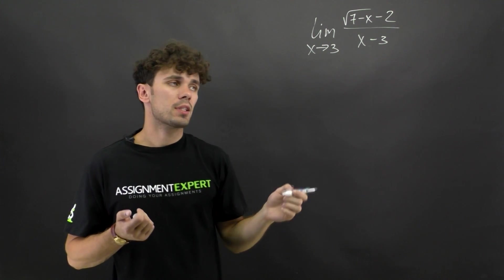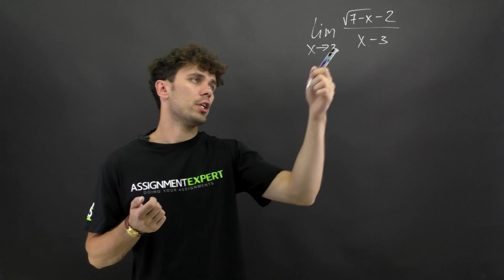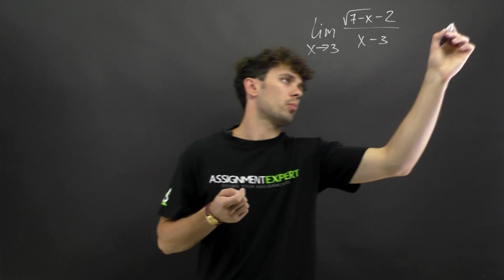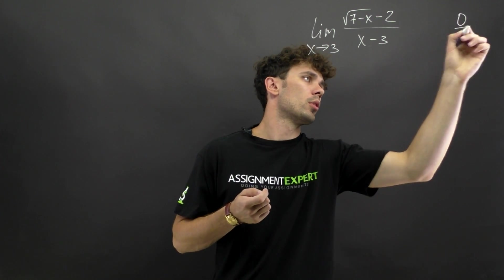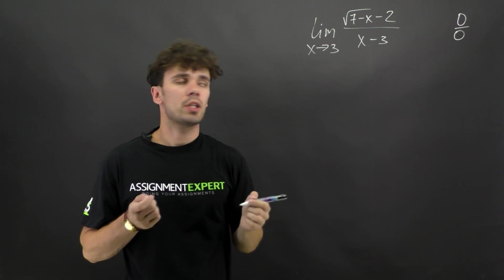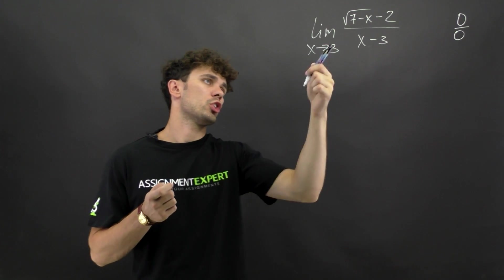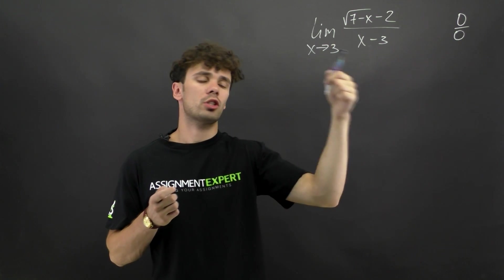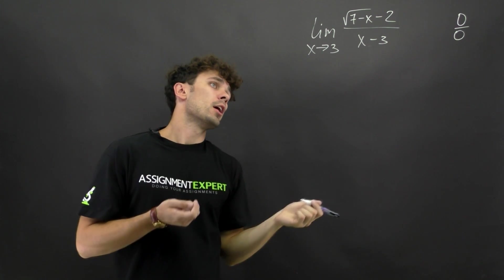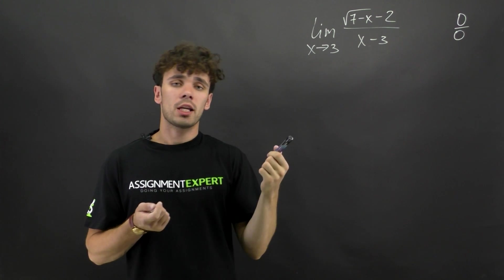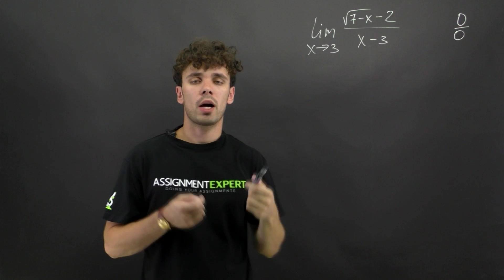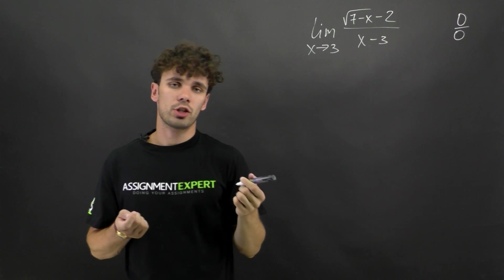If we substitute 3 into our limit we will get 0 over 0. We know that this is an indeterminate form, so we need to somehow change the function under the limit sign to solve it. In such cases we need to multiply the numerator and denominator by the conjugate expression.